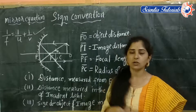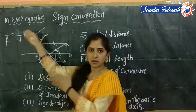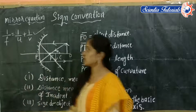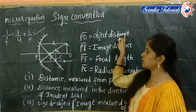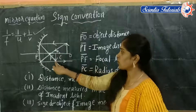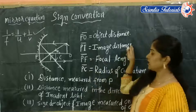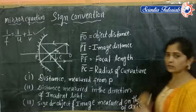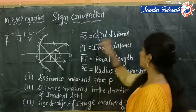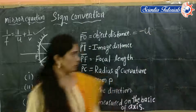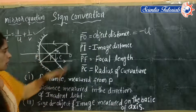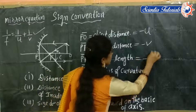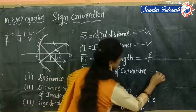By following these three rules, we assign signs to the terms in the mirror formula — focal length, object distance, and image distance. As shown in the diagram: PO is the object distance, PI is the image distance, PF is the focal length, and PC is the radius of curvature. In this case, PO is negative, PI is negative, PF (focal length) is negative, and PC (radius of curvature) is also negative.